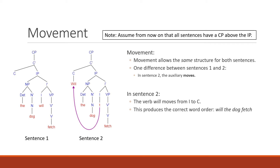Note: from now on, assume that all sentences have a CP above the IP. That is necessary in order to carry out these movements to make questions. In the past we were looking at IP and saying that meant 'sentence' — and in an introductory class it's fair to still think of IP as sentence — but we are going to add the CP, the complement phrase, above it, providing a specifier position for auxiliaries in questions. In sentence two, the verb 'will' moves from I to C, producing the correct word order 'will the dog fetch.'